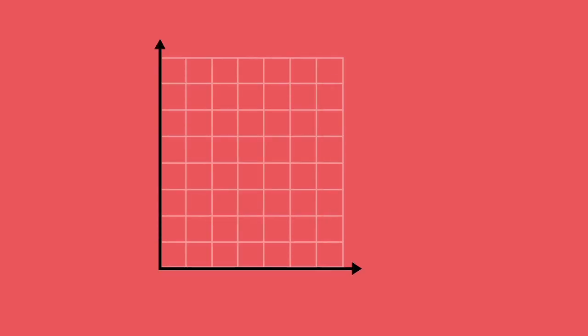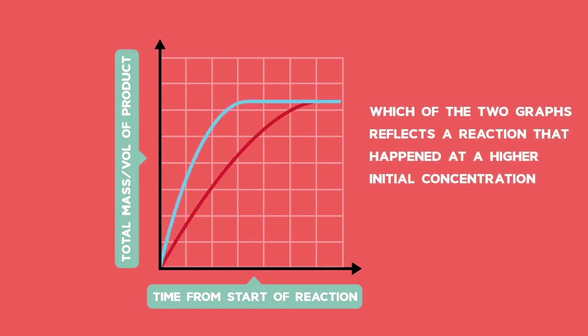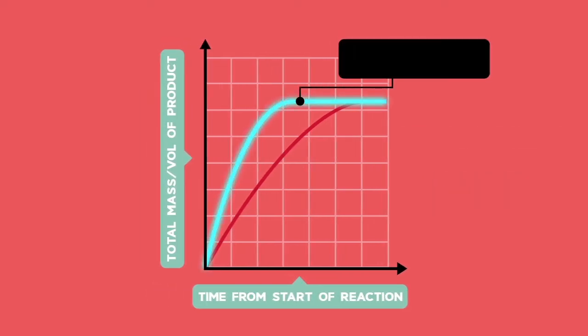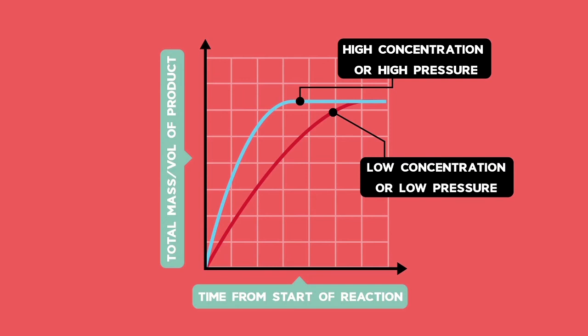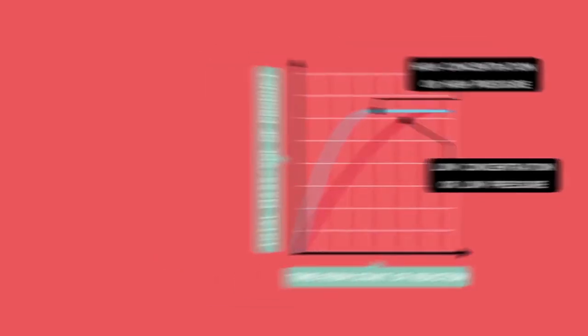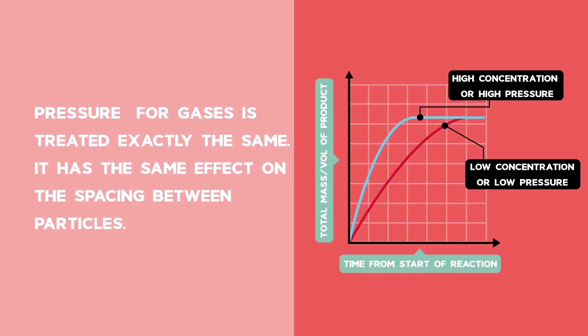In a typical question, we might be asked to identify which of the two graphs reflects a reaction that happened at a higher initial concentration. The blue graph shows a higher concentration reaction because more particles would cause more collisions. So a high-rate reaction compared with the red graph where there are fewer particles and fewer collisions. Therefore, a lower rate of reaction. Now, pressure for gases is treated exactly the same. It has the same effect on the spacing between particles.